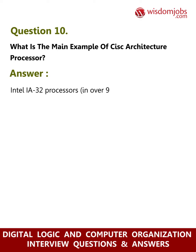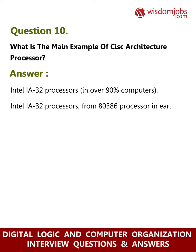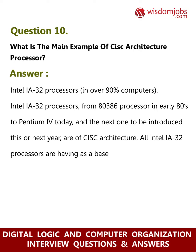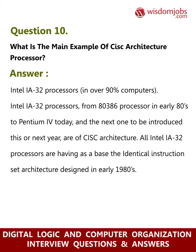Question 10: What is the main example of a CISC architecture processor? Answer: Intel IA-32 processors are in over 90 percent of computers. Intel IA-32 processors range from the 80386 processor in the early 1980s to the Pentium IV today. All Intel IA-32 processors share as a base the identical instruction set architecture designed in the early 1980s.